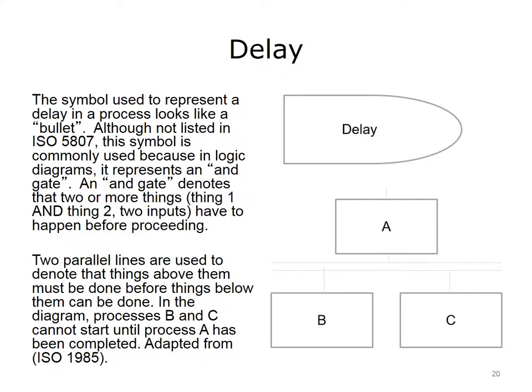The symbols used to represent a delay in a process include: the bullet, which although not listed in ISO 5807 is commonly used because in logic diagrams it represents an AND gate—denoting that two or more inputs must happen before proceeding; and two parallel lines, which denote that things above them must be done before things below can be done. In the diagram adapted from ISO 5807, processes B and C cannot start until process A has been completed (ISO 1985).